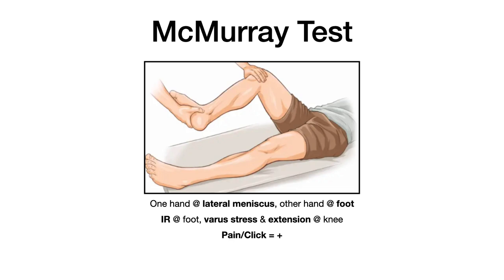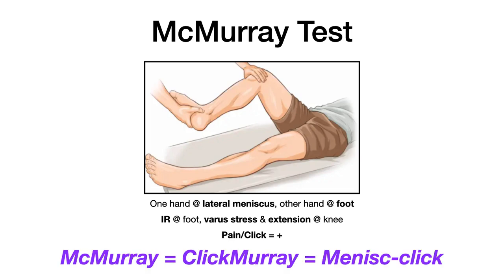The McMurray test has unique hand positioning: one hand palpates the lateral meniscus and the other is on the base of the foot. At the foot, you apply internal rotation; at the knee, you apply varus stress and extend the knee. If the patient feels pain over the lateral meniscus or you hear an audible clicking sound, that's positive for meniscus pathology. Mnemonic: instead of McMurray, say 'Click Murray' because meniscus = click, or say 'menis-click.'